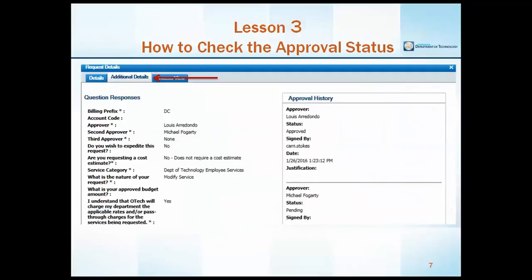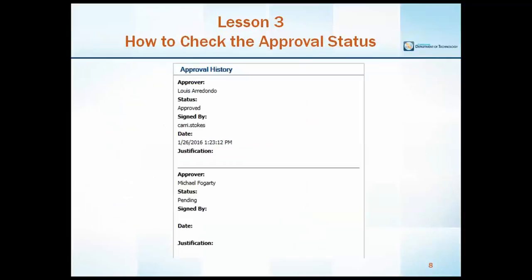After selecting the details link, the submitter can select additional details to identify which approver's queue the request is in. The approval history will display each approver, the status, the approver's electronic signature, and the date and time of the approval. Once the request is approved by all of the selected approvers, the request status will change to initiated or in progress.